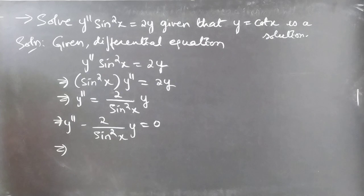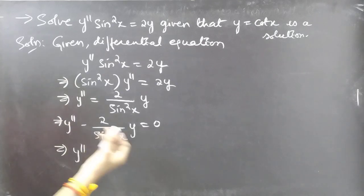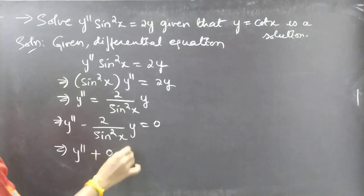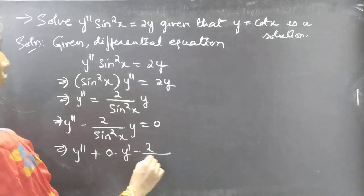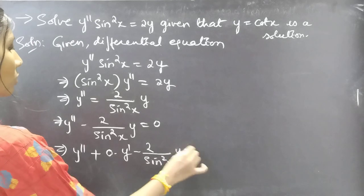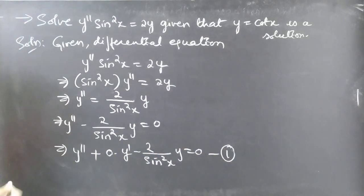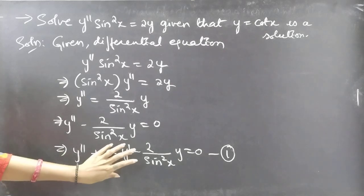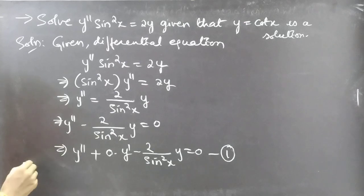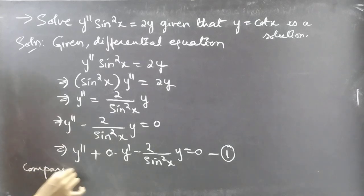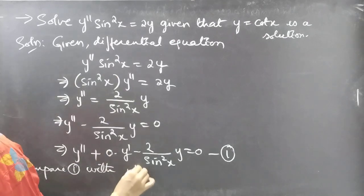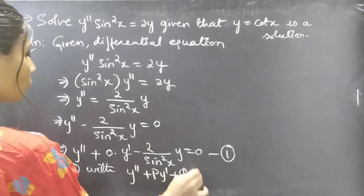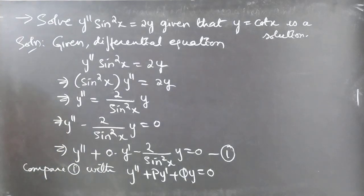We don't have the term involving y', so I'll include a dummy variable: y'' + 0·y' − (2/sin²x)·y = 0. This is in standard form. For our convenience we have added a dummy term. Now compare this with the standard form of the second order linear differential equation: y'' + Py' + Qy = 0.